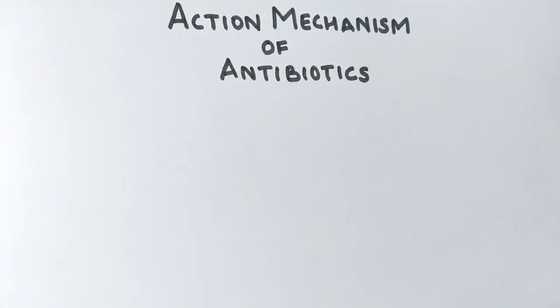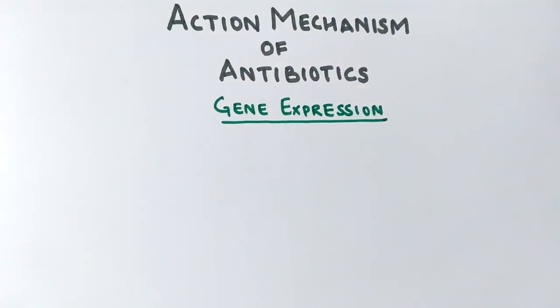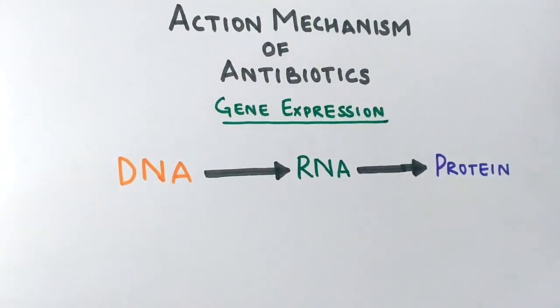The antibiotics work at three levels. The first level is at gene expression level of bacteria. The gene expression of bacteria is a three-step process where we see the flow of information from DNA to RNA to protein.